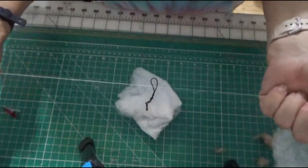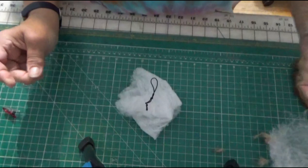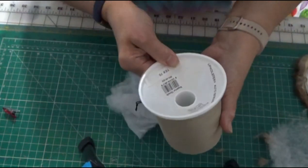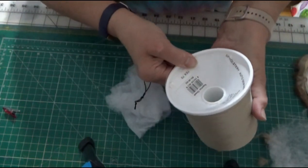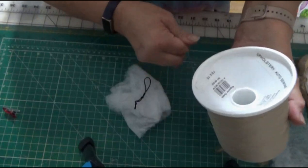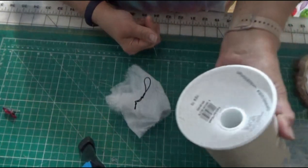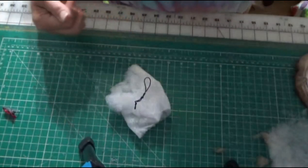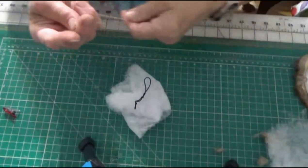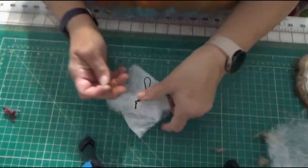I'm using a heavy duty thread. This thread here is superior thread nylon bonded, it is text 70, so it's basically an upholstery or auto sewing. This way when I pull it later it's not going to tear.